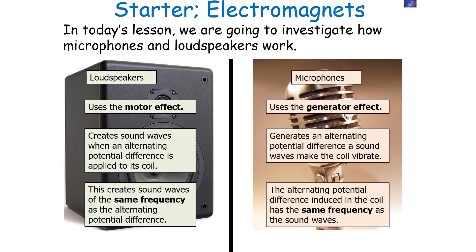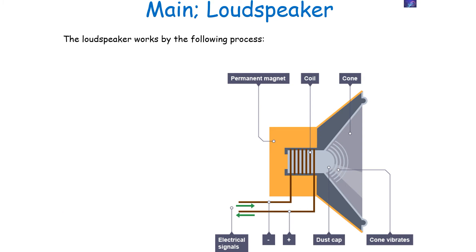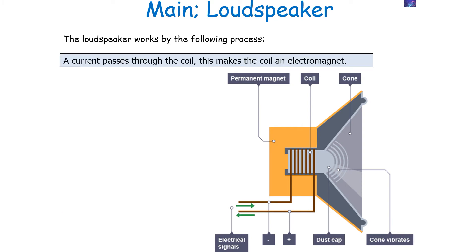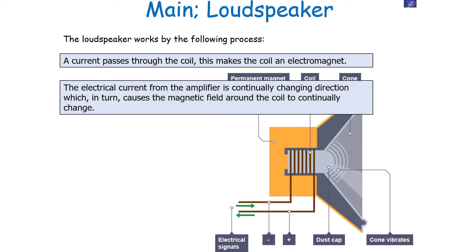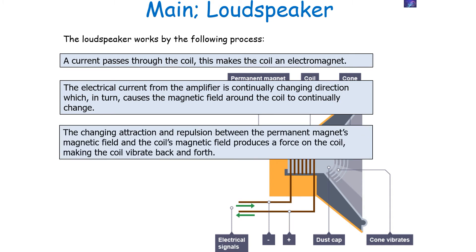A loudspeaker works by the following process. A current passes through the coil, making the coil inside the loudspeaker an electromagnet. The electrical current from the amplifier is continually changing, as it is an alternating current, and this causes the magnetic field around the coil to continually change. The change in attraction and repulsion between the permanent magnet surrounding the coil and the coil's electromagnetic field produces a force on the coil due to the motor effect.